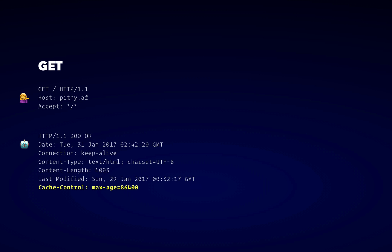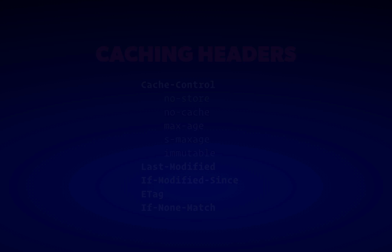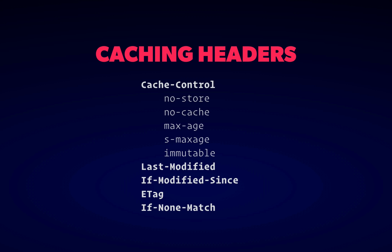When you first receive the object, the cache-control header declares how long it's valid for. And so if you next request that object within that time frame, your web browser doesn't even have to make a request at all. There's a complex interplay of headers and directives that govern this behavior, and while I'll briefly mention all of these today, my goal is not to define each one in the abstract. By the end of today's episode, I hope you'll understand why I'm choosing to host Pithy in a certain way — the caching strategy for a static site is really transferable to the static portions of even highly dynamic apps.